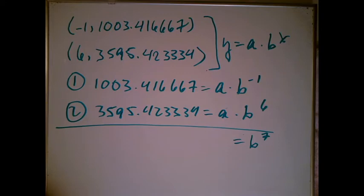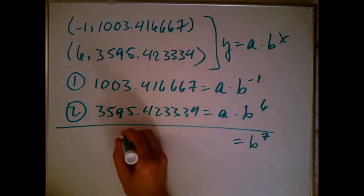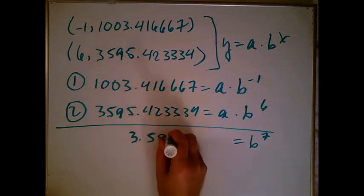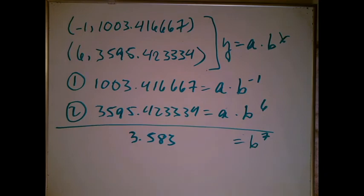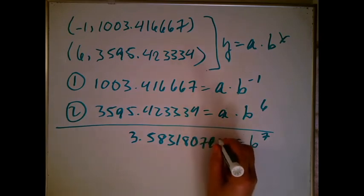Actually, I'm going to use my calculator. It's quicker. So I'm going to get 3595.423334 divided by 1003.416667. And my calculator says I get 3.583180798. So I'll put as many things as I can here.